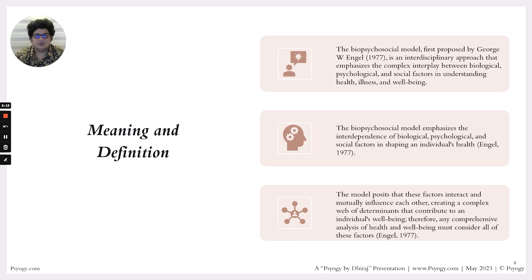A quick introduction about the biopsychosocial model: it was proposed by George L. Engel in 1977 in his paper titled 'The Need for a New Medical Model: A Challenge for Biomedicine.' It is presented as an alternative to the prevalent model of those times, which was the biomedical model. The biomedical model emphasizes that the manifestation of illness is typically due to biological factors.